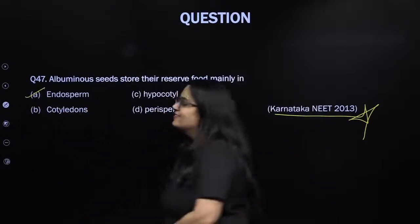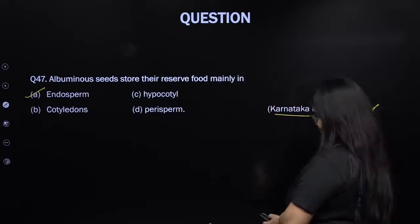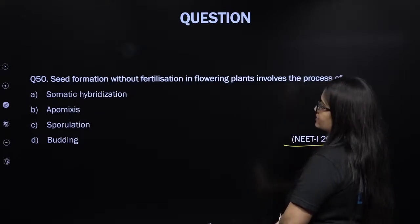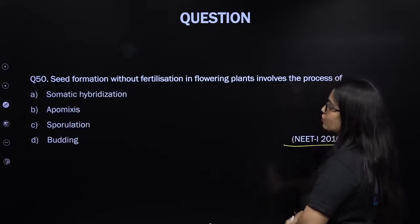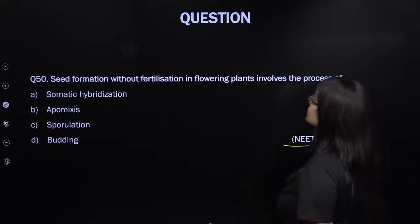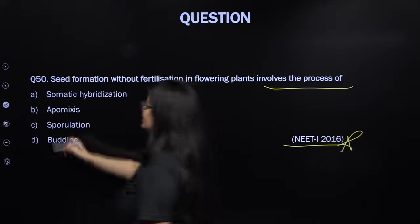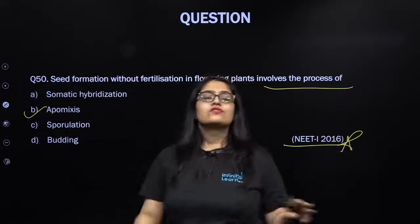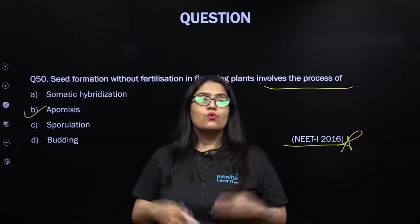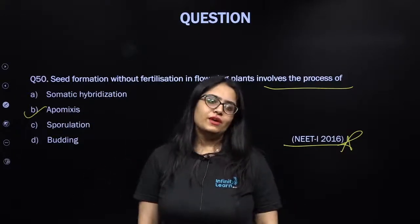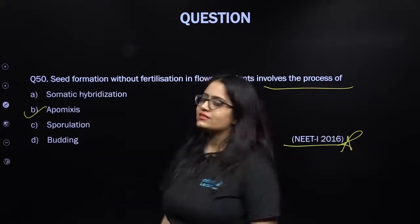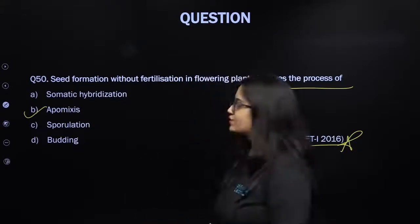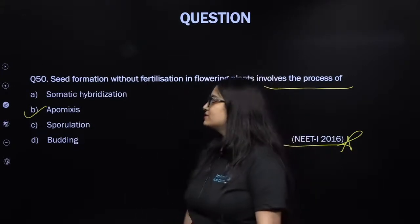From NEET 2016: seed formation without fertilization in flowering plants is called apomixis. In apomixis, seeds are not the result of sexual reproduction — they are not formed via fusion between male and female gametes. This phenomenon is seen in some species of Asteraceae family and grasses.